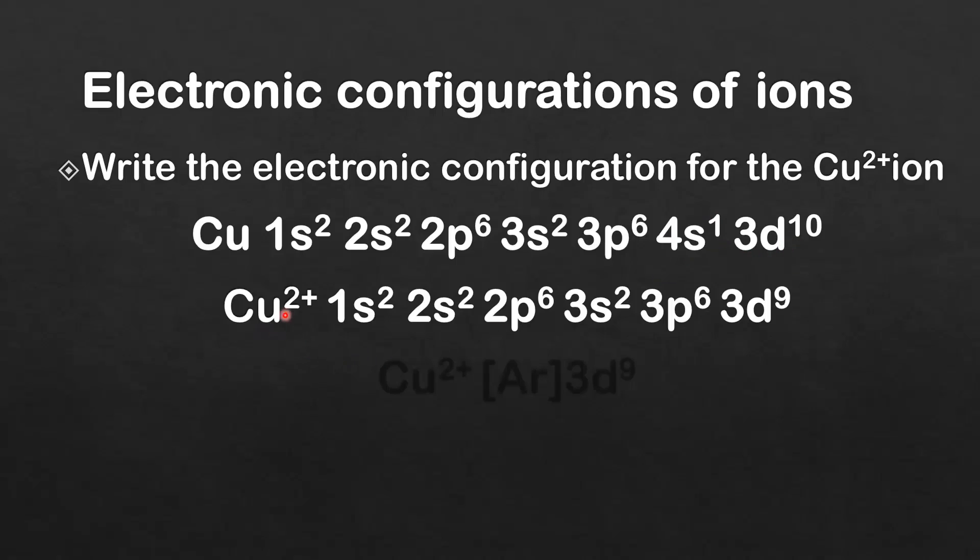So the electronic configuration for the 2 plus ion is 1s2, 2s2, 2p6, 3s2, 3p6, 3d9. The abbreviated electronic configuration can be written as square brackets AR, 3d9.